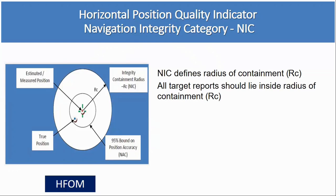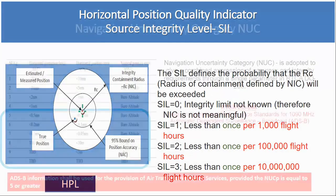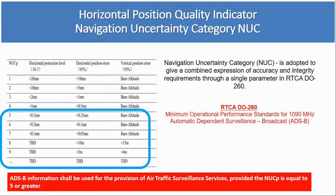Surveillance integrity level: there is a probability that aircraft position may be outside the radius of containment and still no alert is received. SIL equals 3: the probability of aircraft position being outside RC is less than once per 10 million flight hours. Navigation uncertainty category is adopted to give a combined expression of accuracy and integrity requirements through a single parameter in Radio Technical Commission for Aeronautics version D-260.